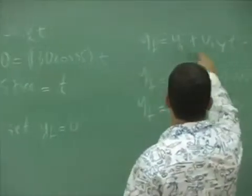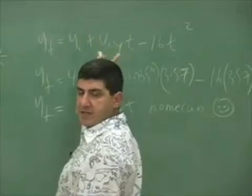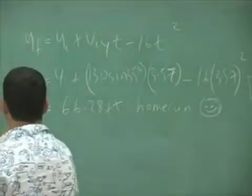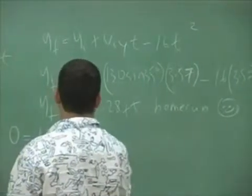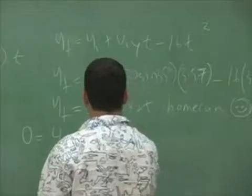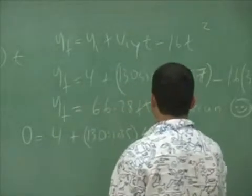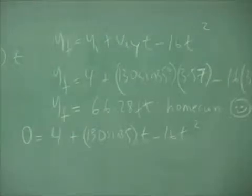So set Y final equal to zero. So in this equation, put zero for this. That will tell you how many seconds it takes to hit the ground. Zero is equal to four plus 130 sine of 35 times T minus 16 T squared. You can put this into your TI calculator, put it into the solver. And this makes your life easy, quicker.